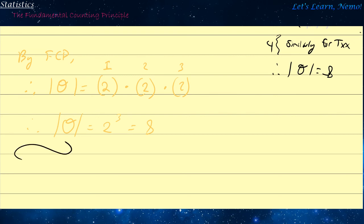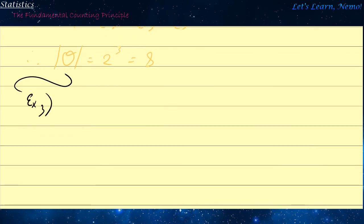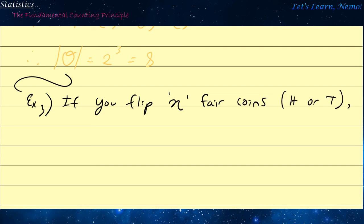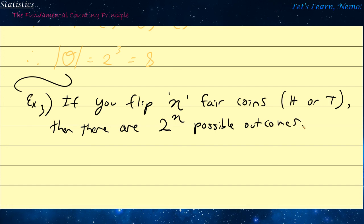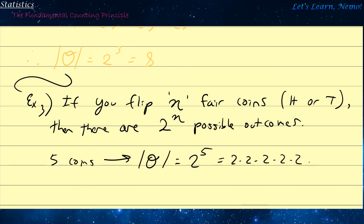From this, you may be able to generate a more general property: if you flip N fair coins, each resulting in either H or T, then there are two to the N possible outcomes. For example, if we have five coins, the number of possible outcomes is two to the fifth — two times two times two times two times two — which equals 32. That's a basic rundown of the Fundamental Counting Principle and how you can use it to quickly count a certain structure of events, and this will be used as a shortcut in upcoming videos.